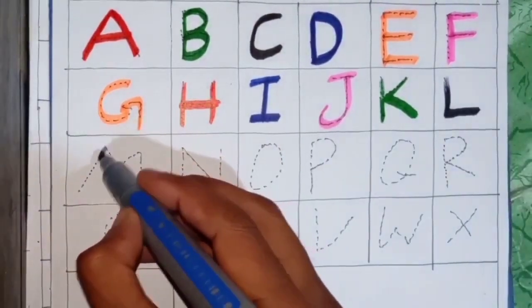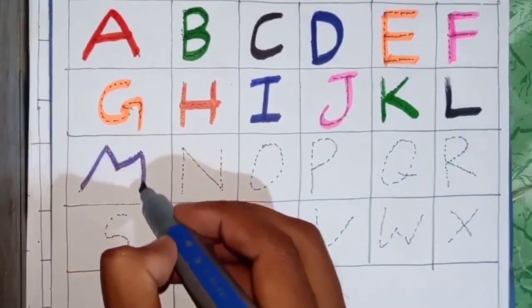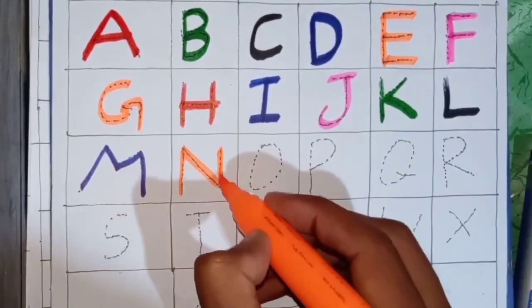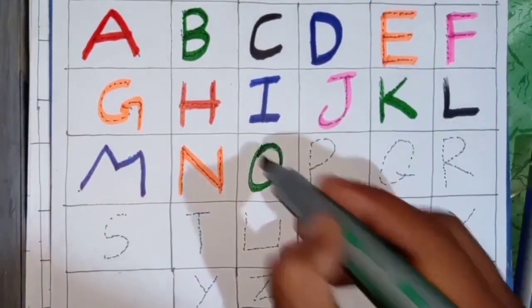Blue color. M. M for Mouse. Orange color. N. N for Nightingale. Pink color. O. O for Orange.